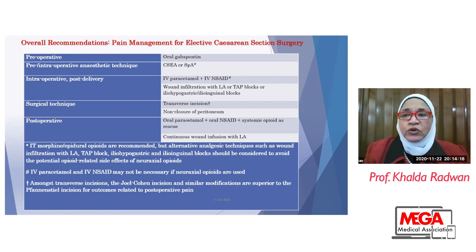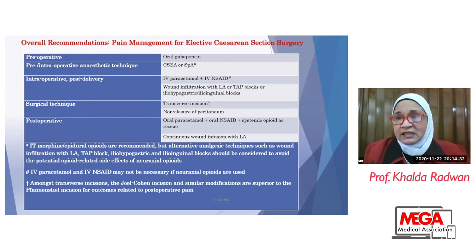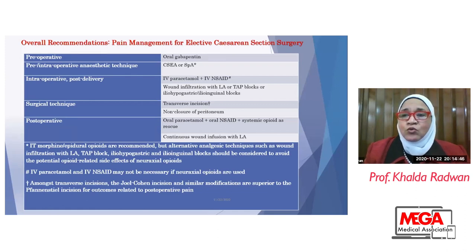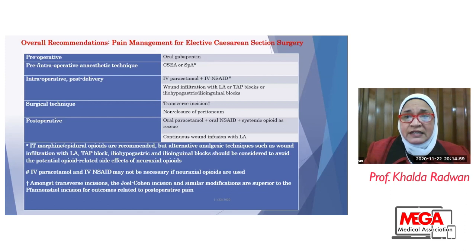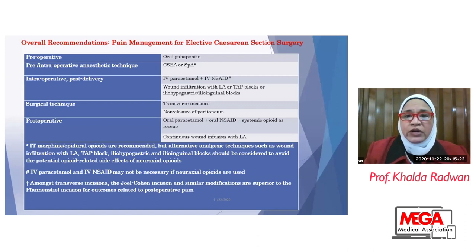We start preemptively before surgery — maybe oral administration of certain drugs, IV injections before induction, and use other drugs intraoperatively continued postoperatively. We may use anesthetic techniques like epidural and spinal anesthesia in cesarean section, introducing local anesthetic drugs intraoperatively and continuing postoperatively with low doses of local anesthetics with opioids. By PROSPECT, they recommend oral gabapentin preoperatively, use of spinal or epidural analgesia intraoperatively together with paracetamol or NSAIDs, and wound infiltration with local anesthetics or TAP blocks.